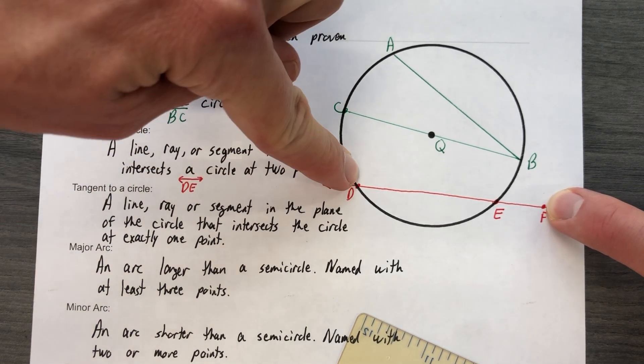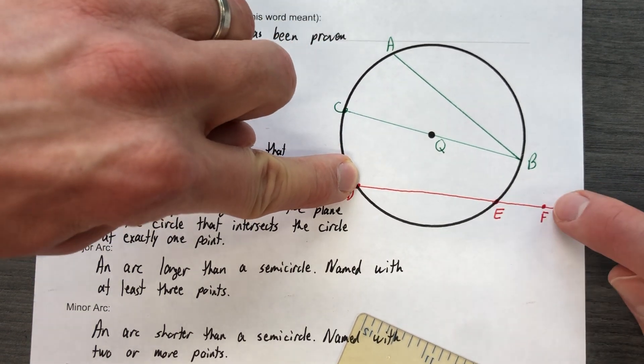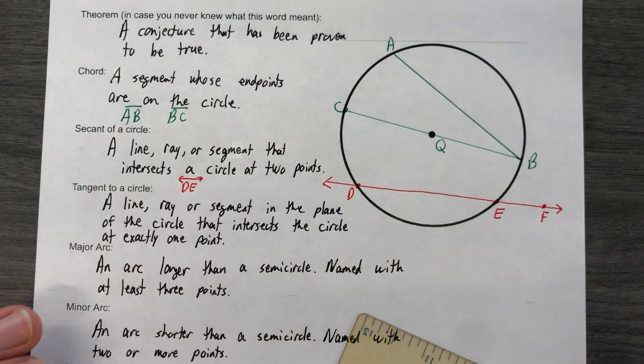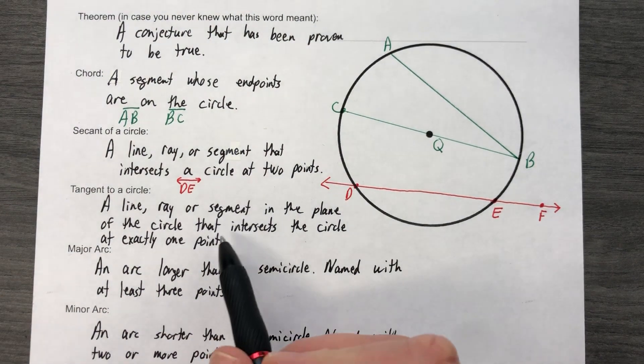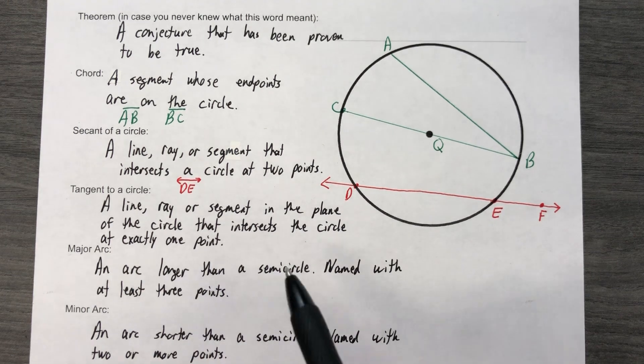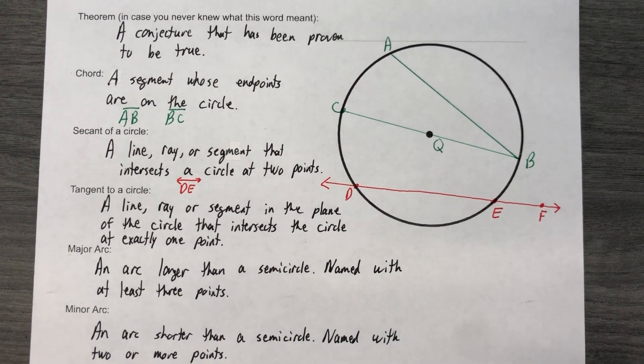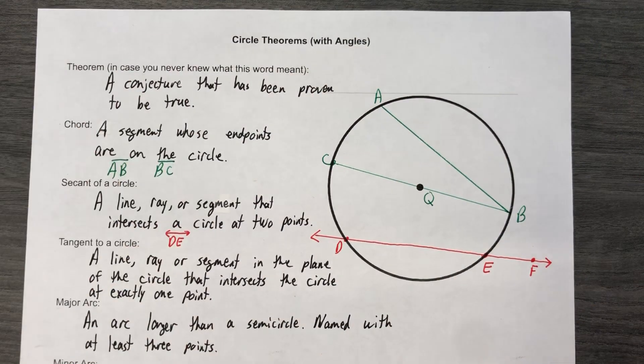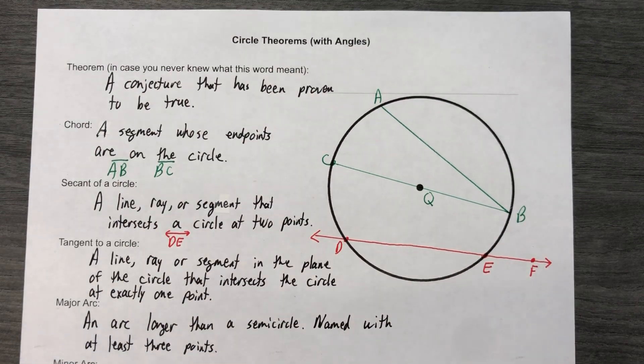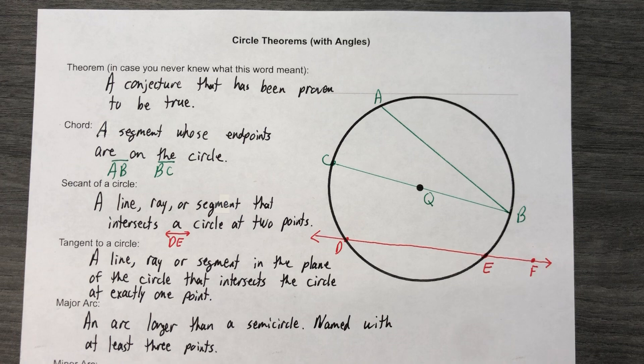Okay, a tangent to a circle is a line or a ray or a segment in the plane of the circle—it needs to be in the plane of the circle, that means it's not going to be coming at it from a different angle, it's all the same flat surface. They threw that part of the definition in there just to clarify things a little bit because there could be exceptions.